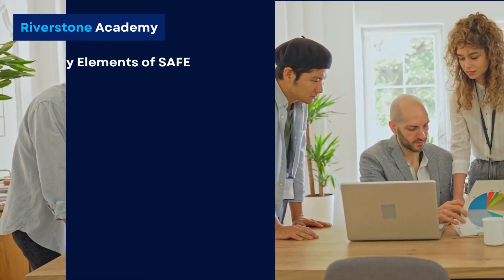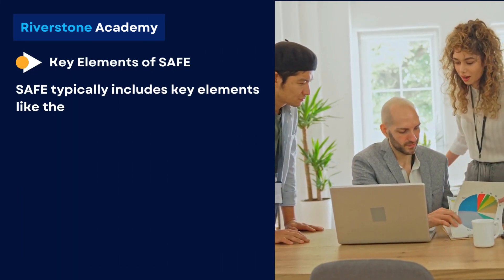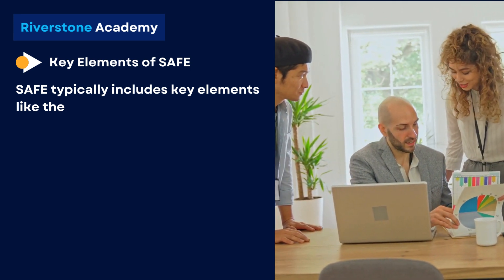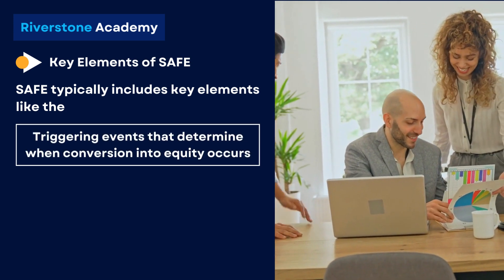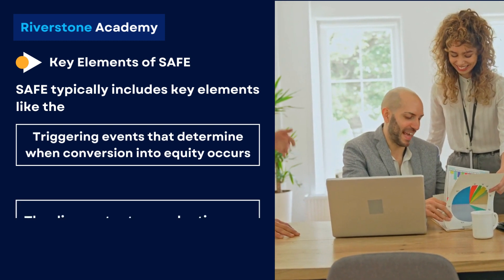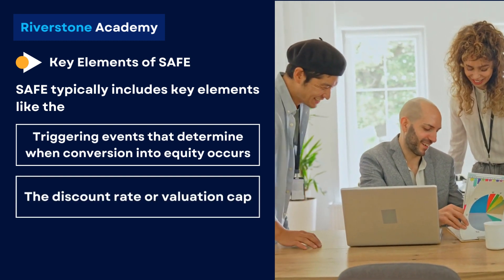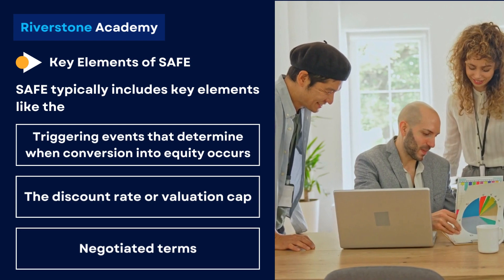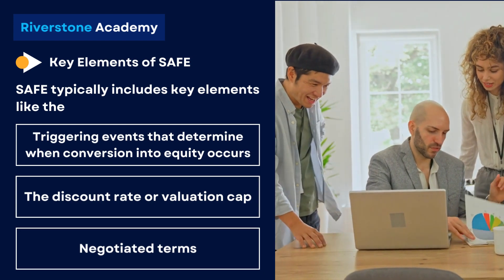SAFE typically includes key elements like the triggering events that determine when conversion into equity occurs, the discount rate or valuation cap, and any other negotiated terms.